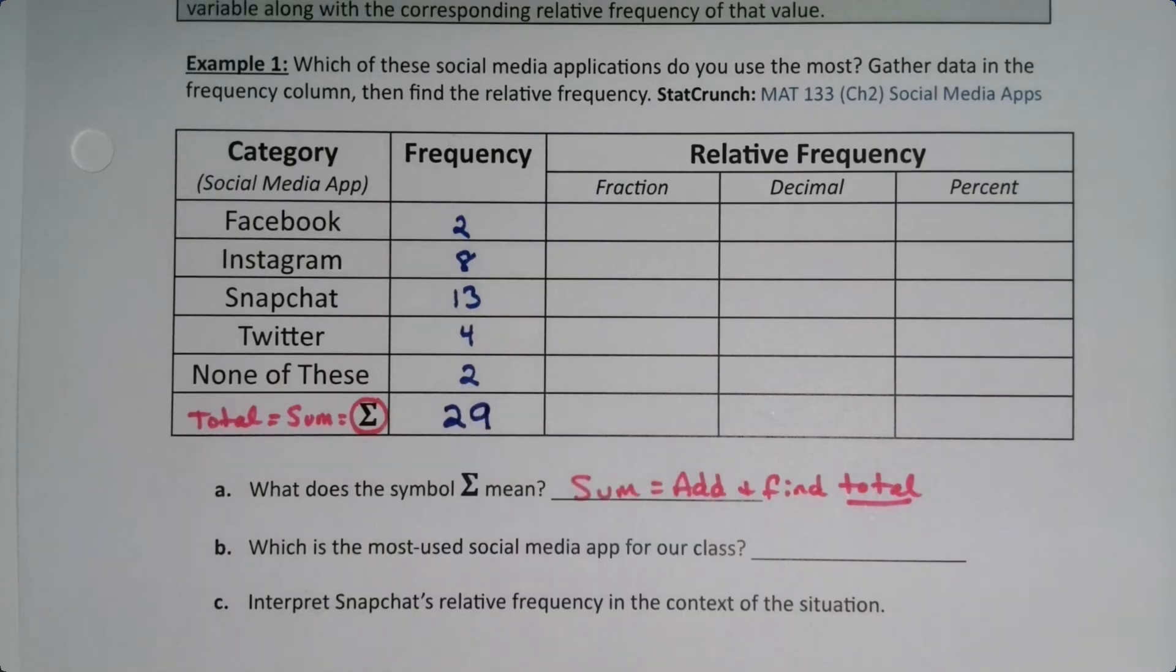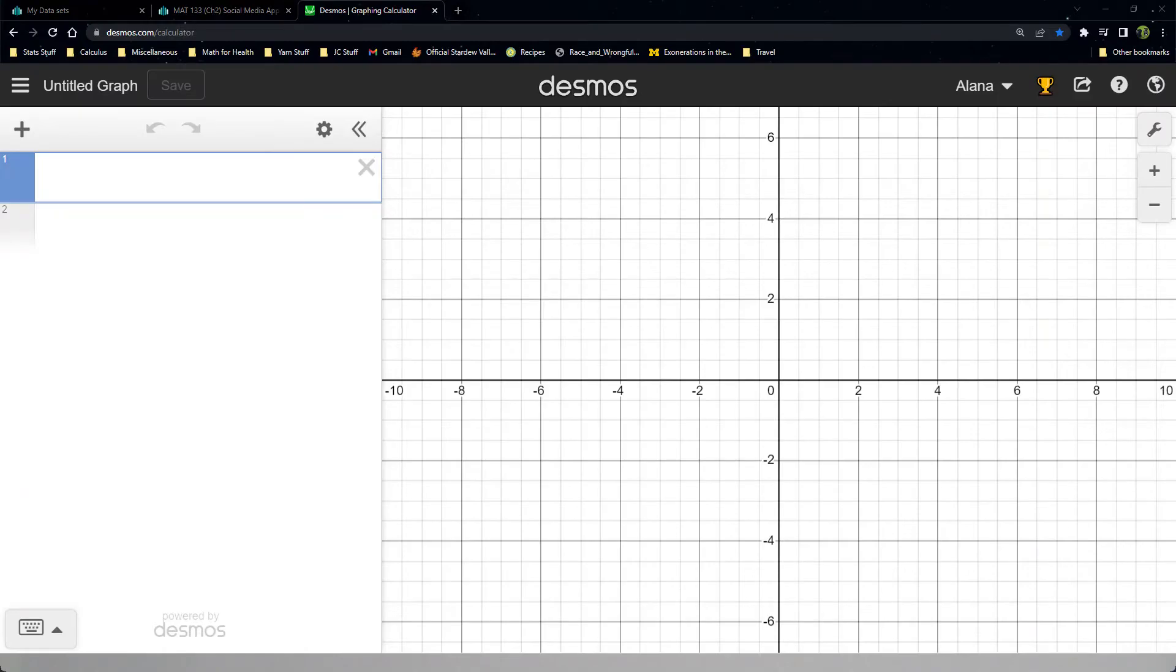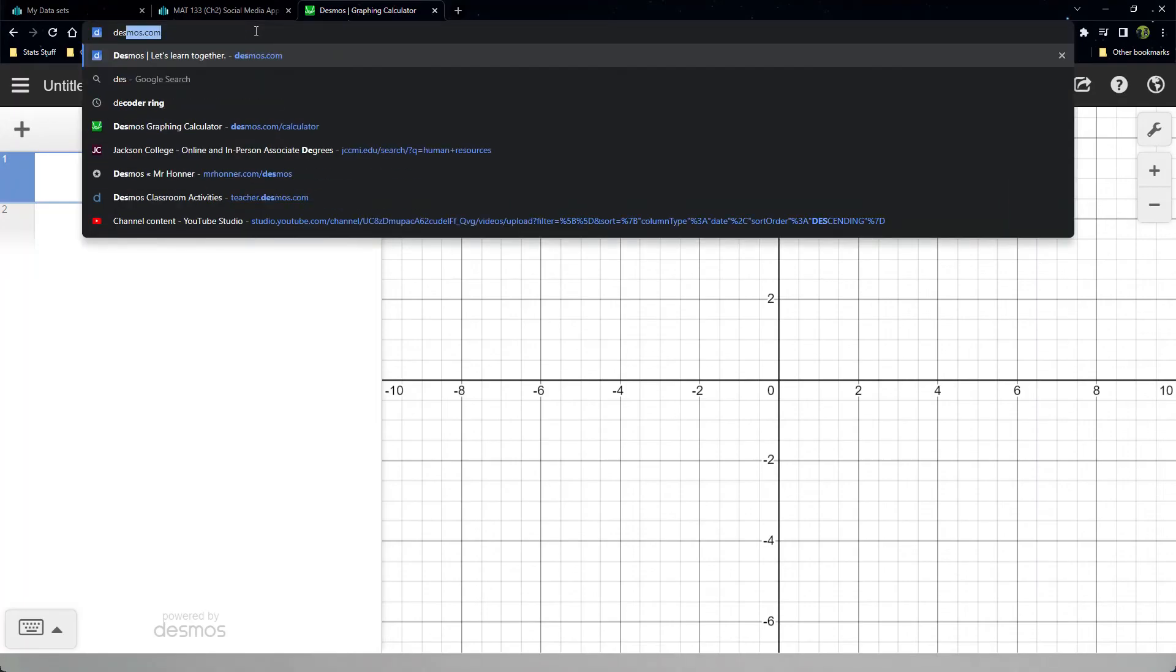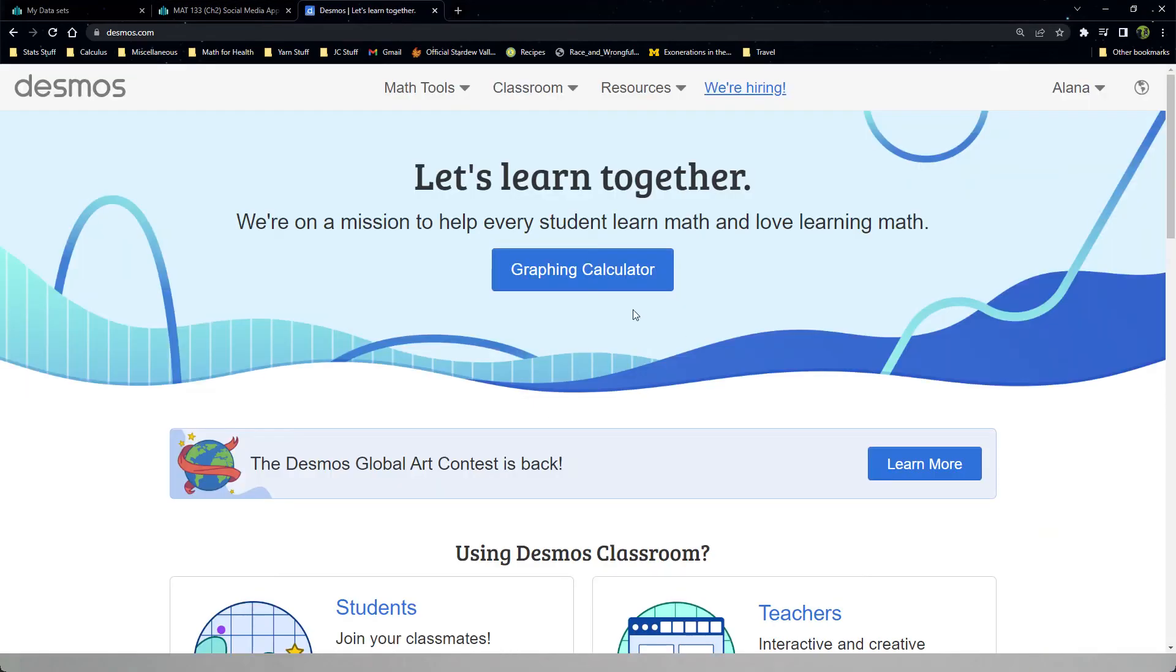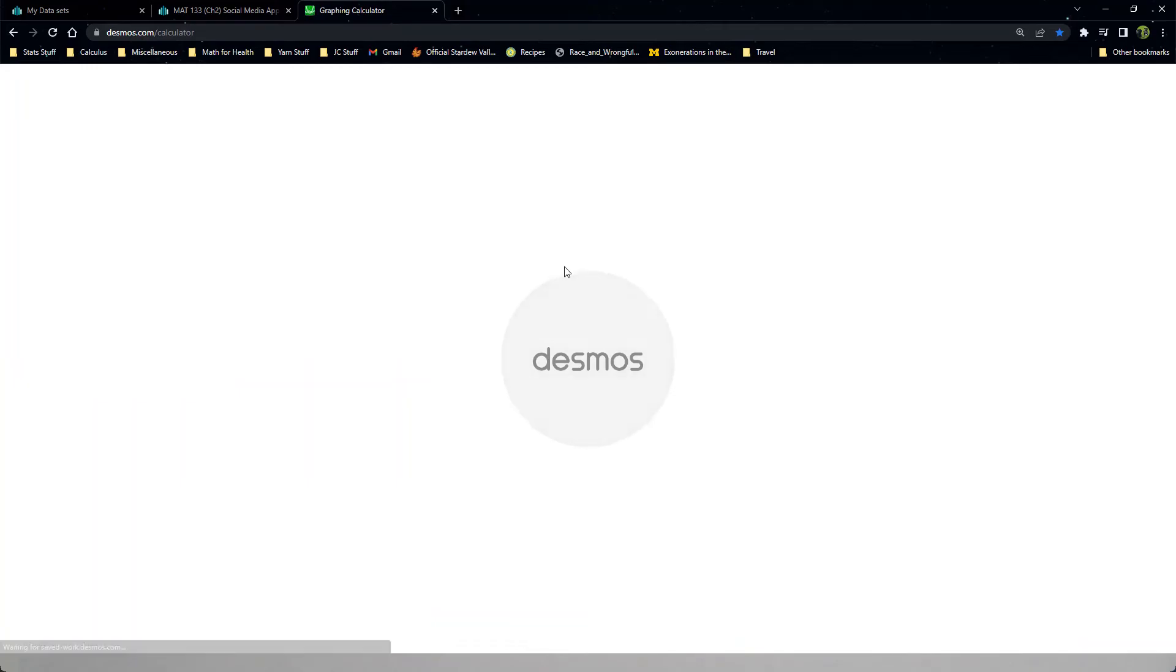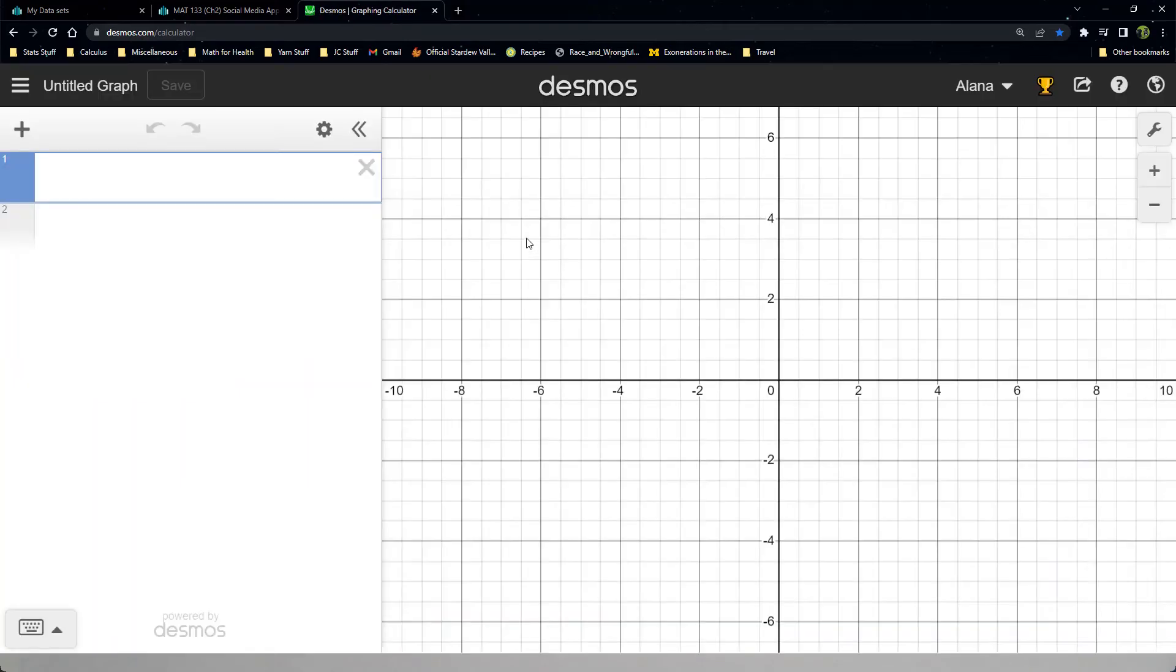And of course we can always check that in Desmos if we're not comfortable adding in our heads like I just did. So I went to Desmos.com. Actually let me just show you real quickly. I go to Desmos.com and it'll say what do you want to do? And I just click the graphing calculator, which is this big blue button right here. So I click to that. All right, so then I can say to Desmos I want 2 plus 8 plus 13 plus 4 plus 2. And it'll tell me right here that the answer is 29. So great, lovely.